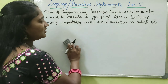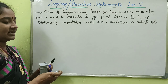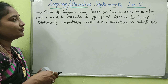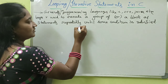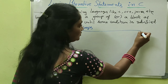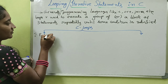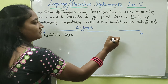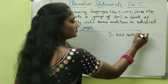Loops are categorized into two types. The first one is entry controlled loops, and the second one is exit controlled loops.